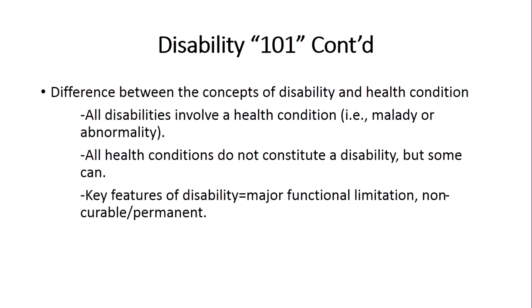There's an important difference between disability and health condition that people often confuse. All disabilities involve a health condition — a malady or abnormality. However, not all health conditions constitute a disability, though some can. Health conditions don't rise to the level of disability unless they produce a major functional limitation that is non-curable and permanent. If a health condition severely impacts a major life area and is non-curable and permanent, then it can be considered a disability.